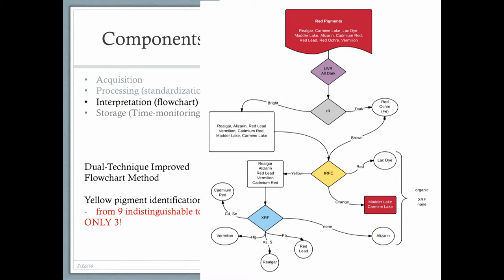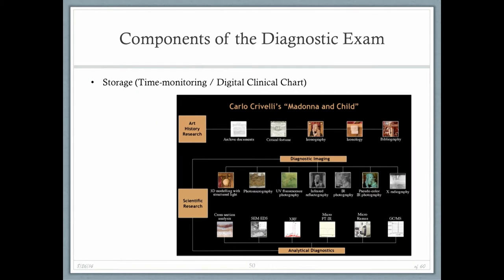The organics are hard to discriminate. For red pigments, we can determine more than was possible before, but two lake pigments are left over — madder and carmine lake. After the analysis, interpretation, and processing, we go to data storage.